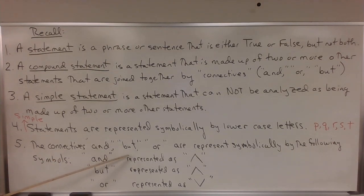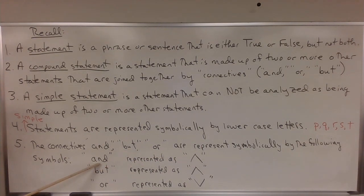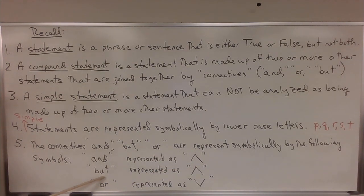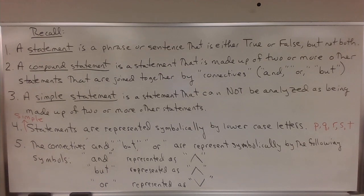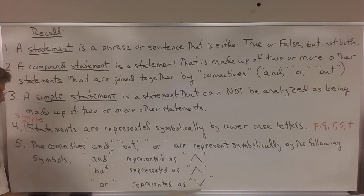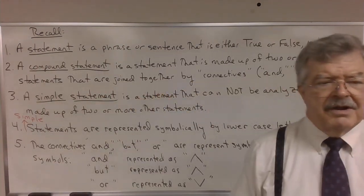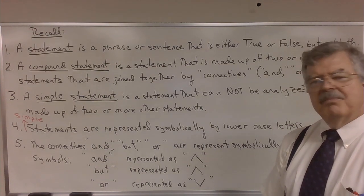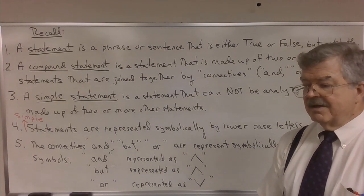The connectives AND, BUT, and OR are represented symbolically by the following symbols. The connective AND is represented by this symbol that looks like an upside-down V. The connective BUT is represented by the same exact symbol. The connective OR is represented by a symbol that looks like a V. We'll find out that logically AND and BUT pretty much mean the same thing.